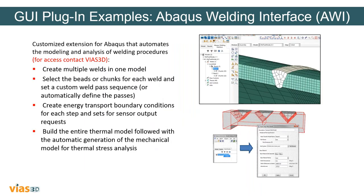Another good example of a GUI plugin is the Abacus Weld Interface. If you'd like to access it, contact us. For this application, you can create multiple welds in one model — for example, on a pipeline or pressure vessel. You select the beads or chunks for each weld, select a custom weld pass sequence, and then simulate the whole welding process. Using this plugin, you can build an entire thermal model with automatic generation and then perform thermal stress analysis of that model. It's automated and saves a lot of time.